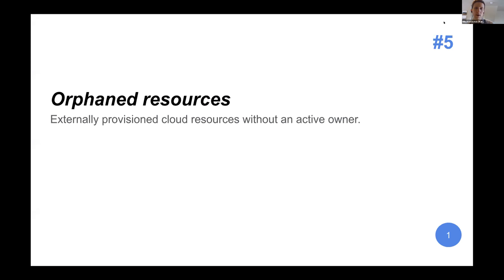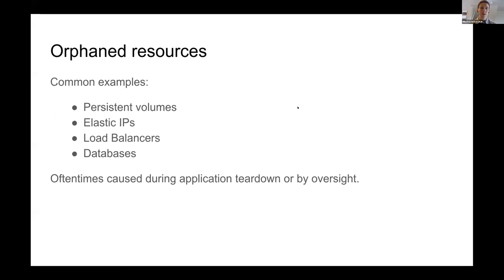The first is orphaned resources. We'd categorize this as pulling lever one — time running. There are often cloud resources in your infrastructure that aren't doing anything, don't have an owner, and you're just paying for them. This could be IPs, persistent volumes — probably the biggest one — or load balancers. We've certainly had teams install our product and quickly figure out they had tens of thousands of dollars of disks just sitting idle without owners.